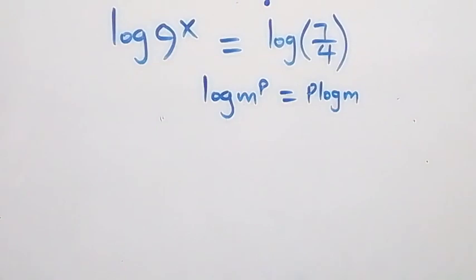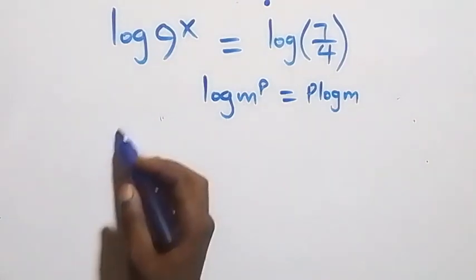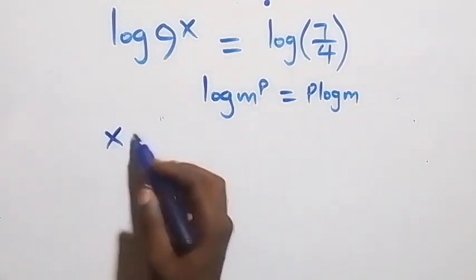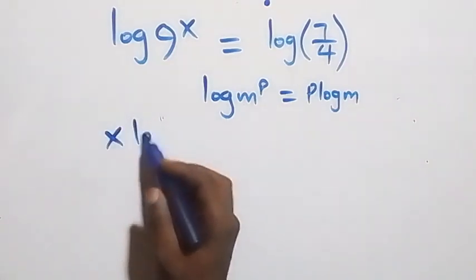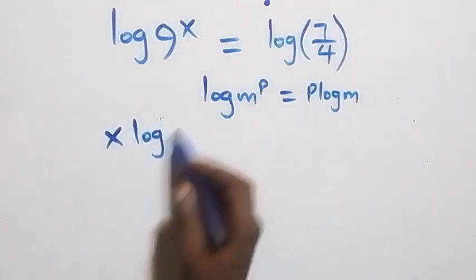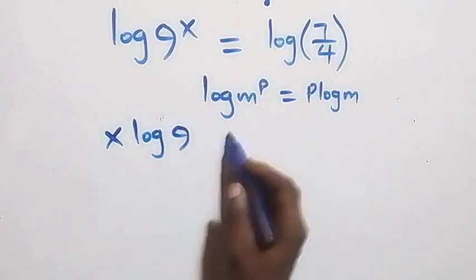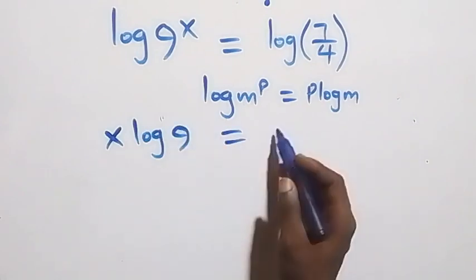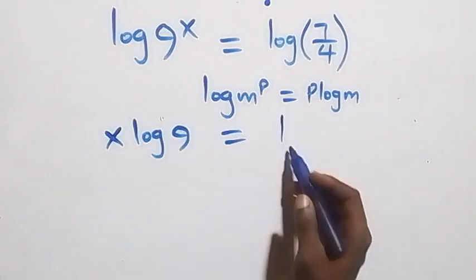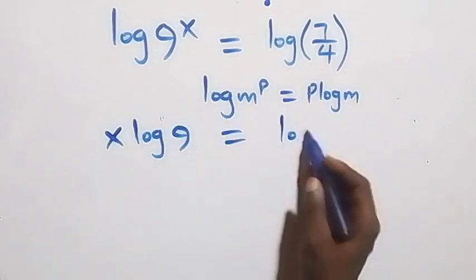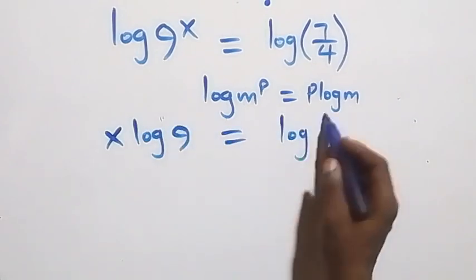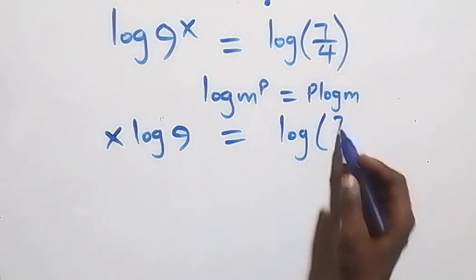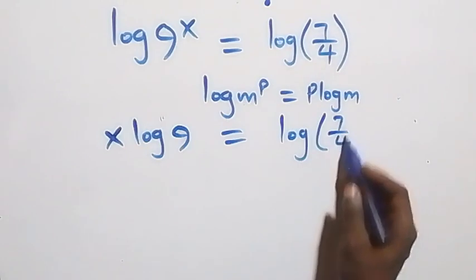Here we have x log 9 equals log 7 over 4.